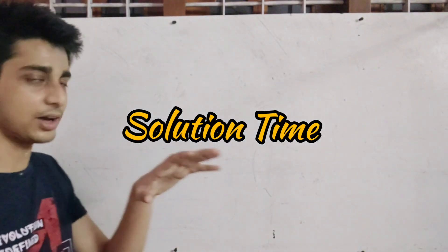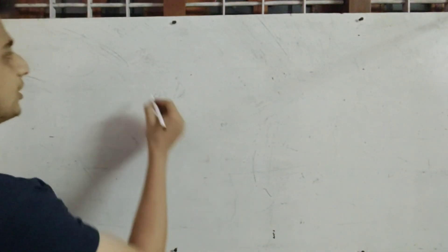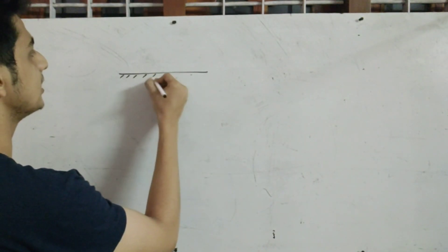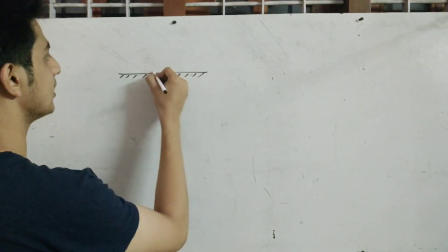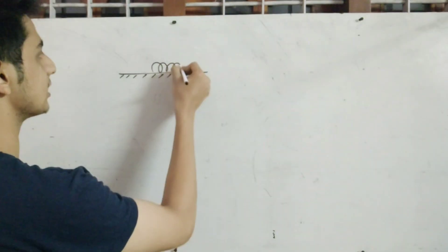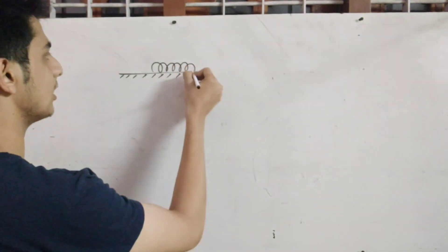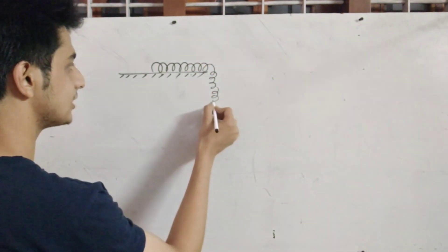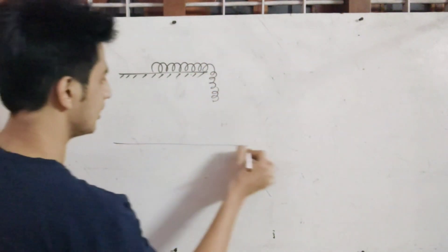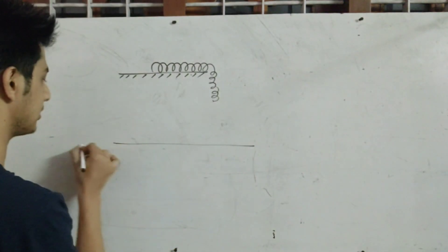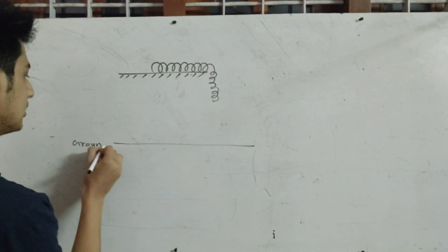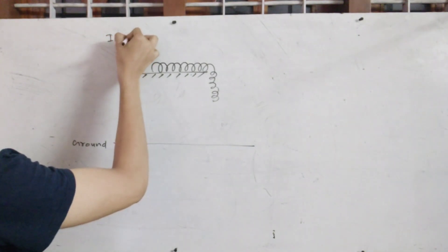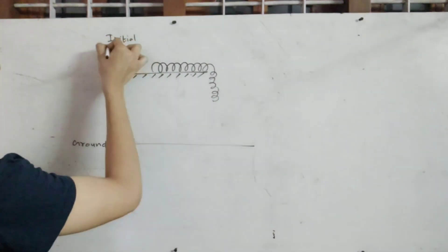So the solution: if you want to represent a figure, this is our table. This is the initial condition. This is the ground. Initial condition.